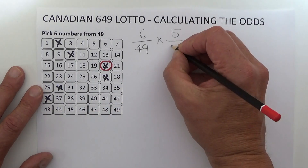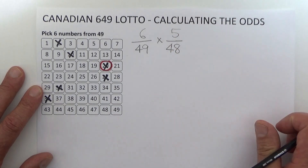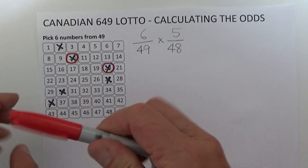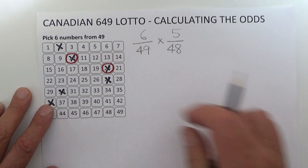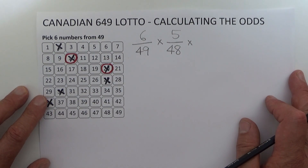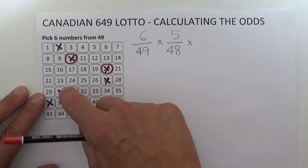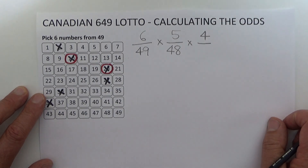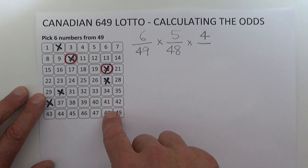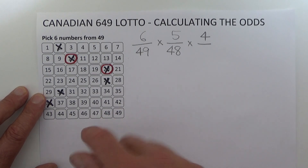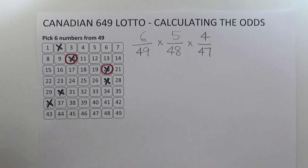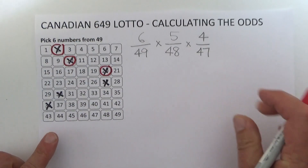I'll circle one of those numbers to show that number 10 matched the second number drawn. When the third number is drawn, you've got four chances of matching it. Because two numbers have already come out of the barrel, there are 47 balls left, giving you four chances in 47. I'll mark off one of those numbers to show it's matched.